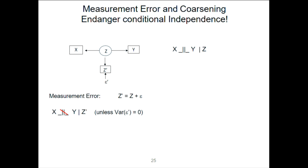Unless the variance of epsilon-prime is zero — if there's a constant being added to Z-prime, that's not a problem. But if it's actually putting in noise that has variation, then as the sample grows without bounds, you will more and more be able to reject the independence of X and Y when you condition on Z-prime.